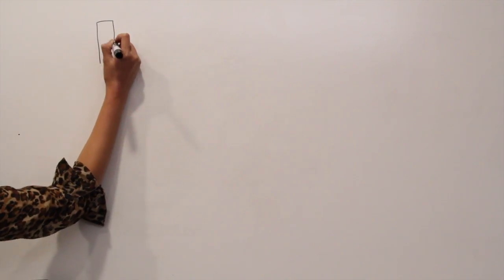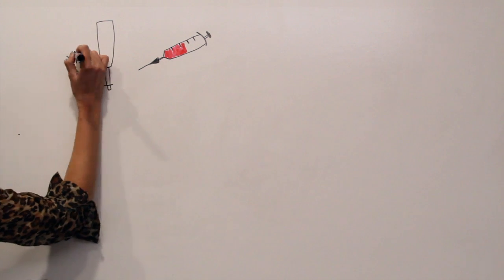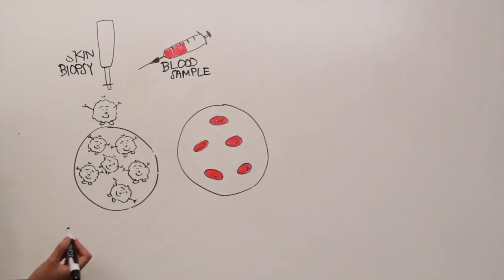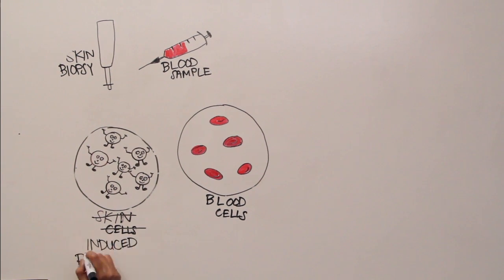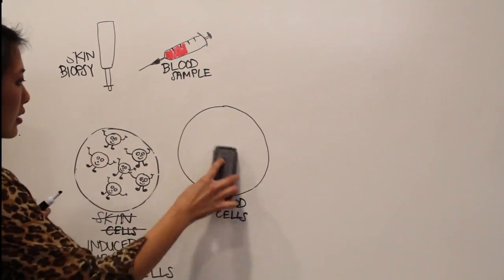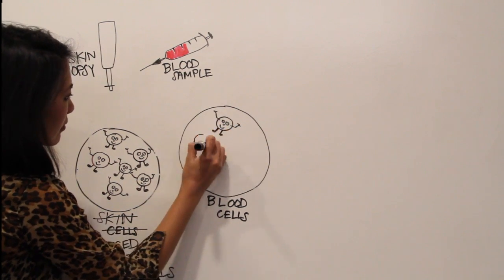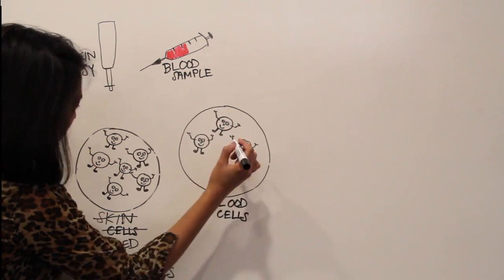Our lab takes biopsies from these patients, which are either skin biopsies or blood samples, and converts these skin and blood cells into induced pluripotent stem cells, also known as IPS cells, by adding special chemicals that rewind them to an undifferentiated embryonic-like state.